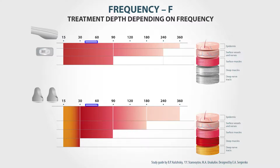When we increase the frequency to between 40 and 60 Hz, the treatment is precisely focused on the subcutaneous tissues. If we increase it to 120 Hz, it stays on the level of surface nerves and vessels.